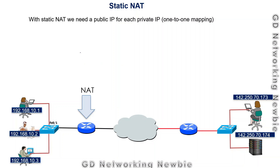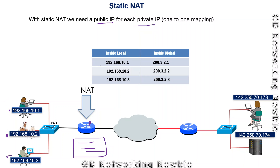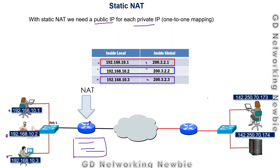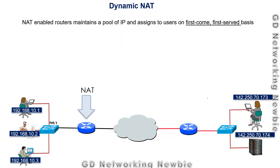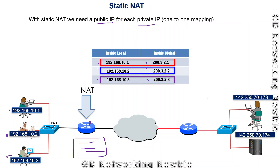In static NAT, we need one public IP address for each private IP address — a one-to-one mapping. For example, three private IP addresses require three public IP addresses at the router. These mappings are configured manually and statically, so a specific inside local address is always mapped to a specific inside global address.